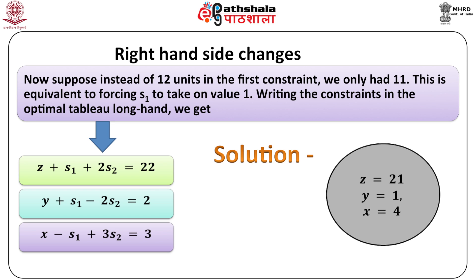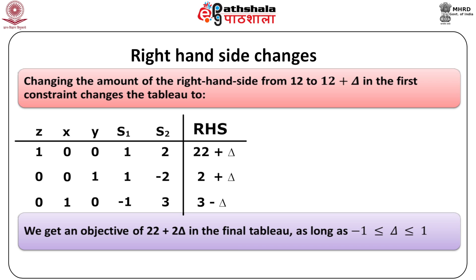If we force s1 to 1 and keep s2 at 0 as a non-basic variable should be, the new solution would be z equal to 21, y equal to 1, and x equal to 4. Since all variables are non-negative, this is the optimal solution. In general, changing the right-hand side from 12 to 12 plus delta in the first constraint changes the tableau as indicated. This represents an optimal tableau as long as the right-hand side is all non-negative; in other words, we need delta between minus 2 and 3 for the basis not to change. For any delta in that range, the optimal objective will be 22 plus delta.